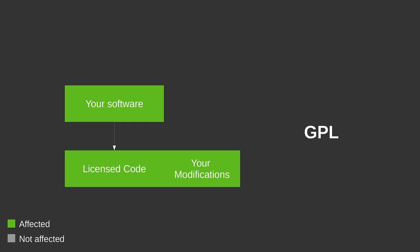You might recognize these diagrams. Basically you have your software — a piece of software you write — that depends on a piece of licensed code, referred to as 'the work' in the license. You can also make modifications to the licensed code. GPL is really simple: if you depend on the licensed code, your code also has to be GPL, and your modifications also have to be GPL. What does the arrow from your software to the licensed code mean?